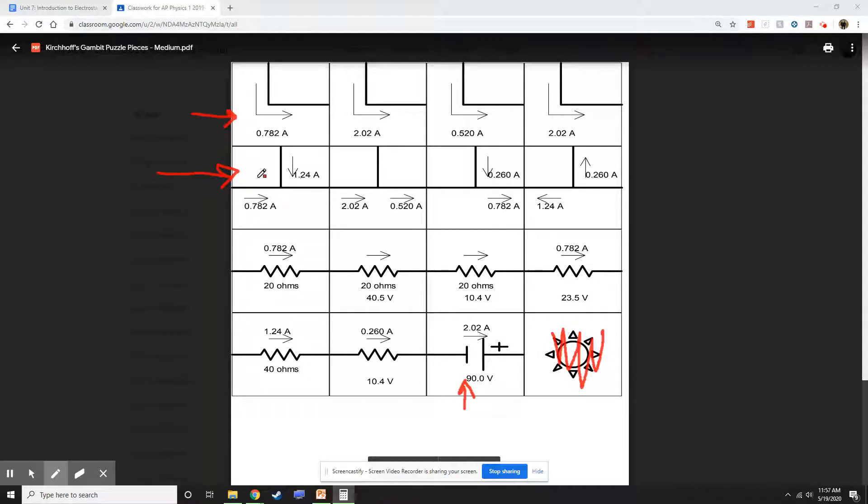So right here, this is an example of a branch. In this case, I have 0.782 and 1.24 amps. And these two are coming together. So if I use my calculator, 0.782 plus 1.24, that means that this branch right here is 2.02 amps. So feel free to write on these cards.